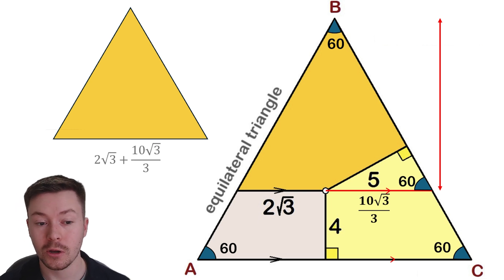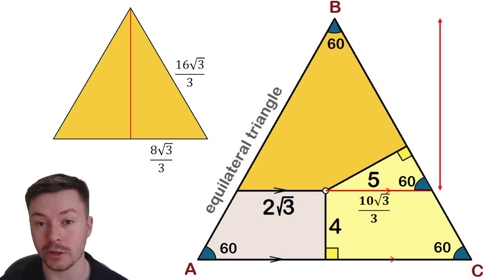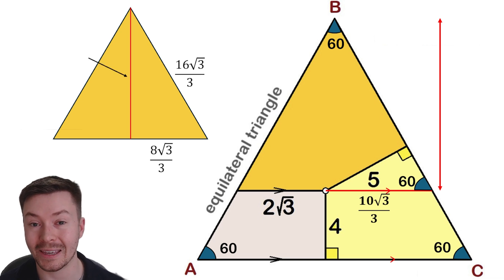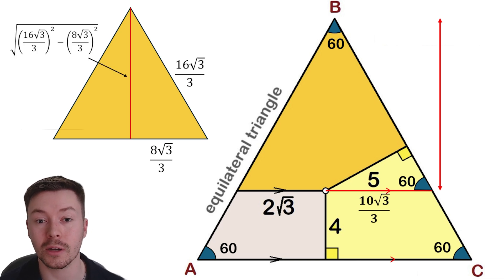Well I should be able to because I can split that in half to give me 8 root 3 over 3, and I know that the other side length, the hypotenuse now of this right angled half of my equilateral triangle, will be 16 root 3 over 3. So I can get the height here by using Pythagoras, which gives me an answer of 8, which is quite nice.